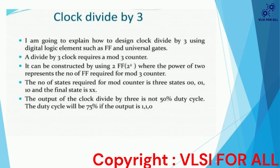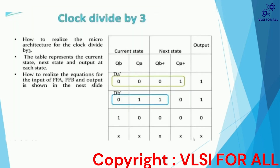A divide-by-three clock requires a mod-3 counter, which can be constructed using two flip-flops. The number of flip-flops required is determined by the power of two. The number of states required for the mod-3 counter is three states: 00, 01, and 10. The final state is not required, so we designate it as a don't-care. The output of the clock divided-by-three is not a 50% duty cycle — the duty cycle will be 75% if the output is 110.